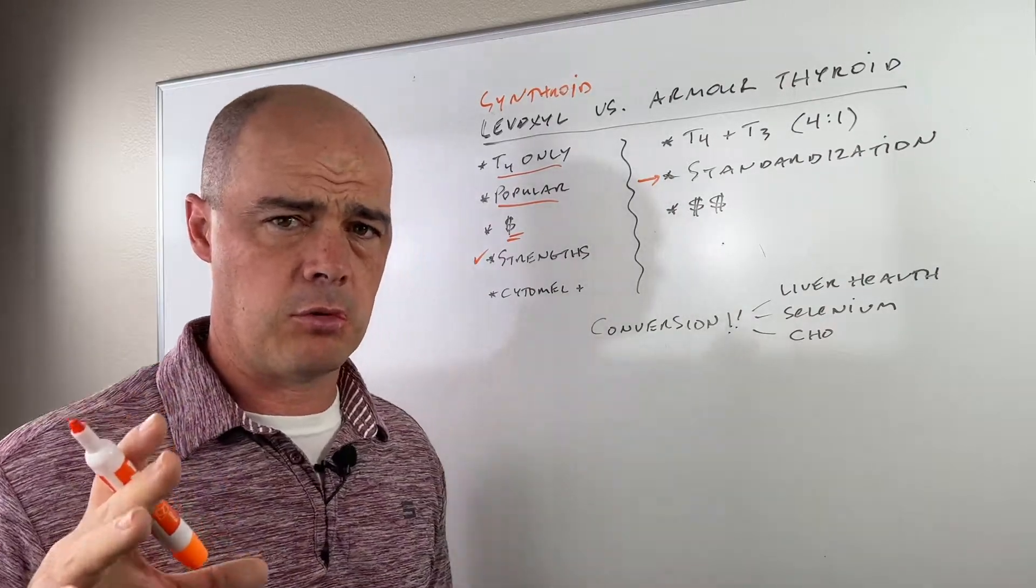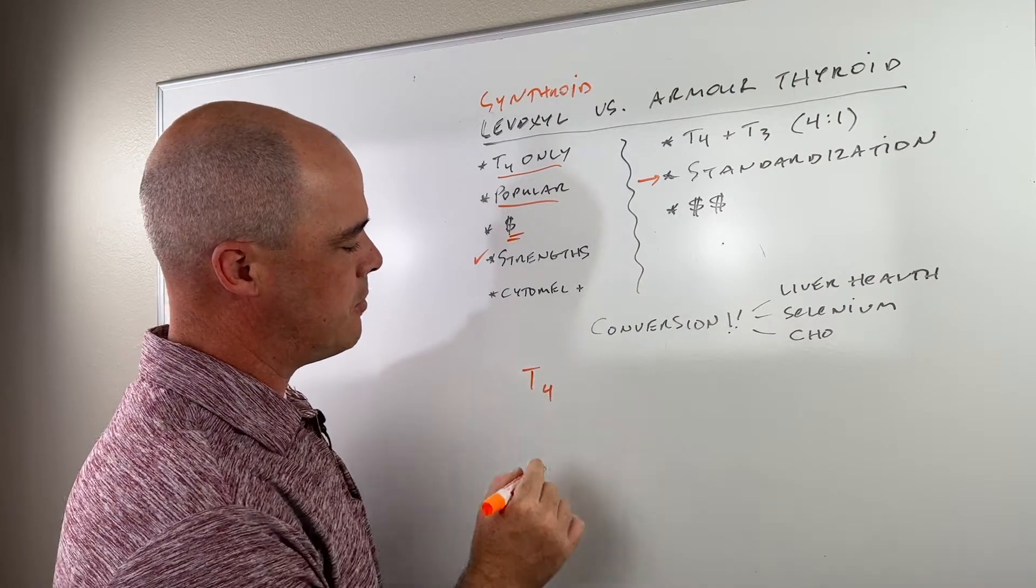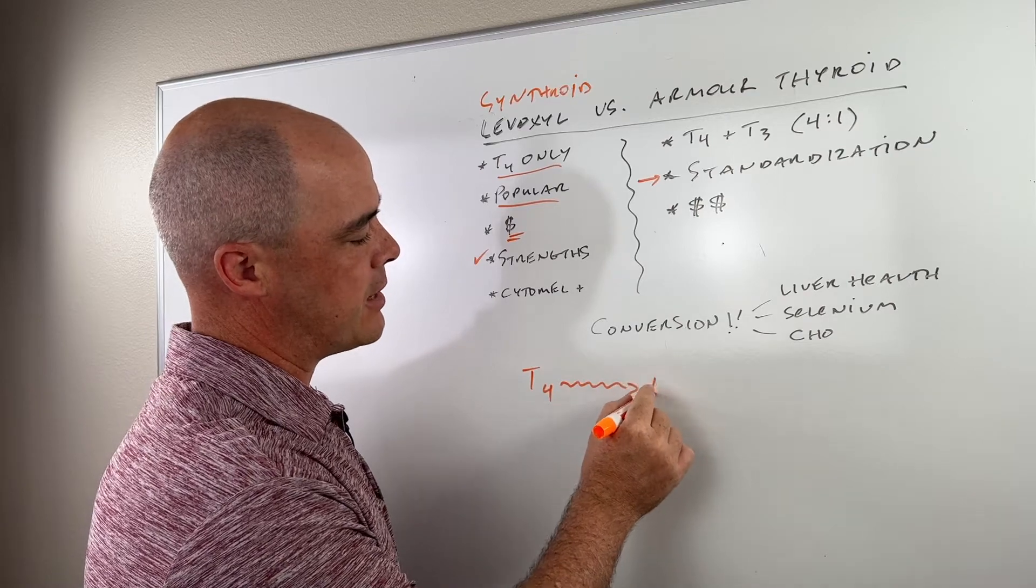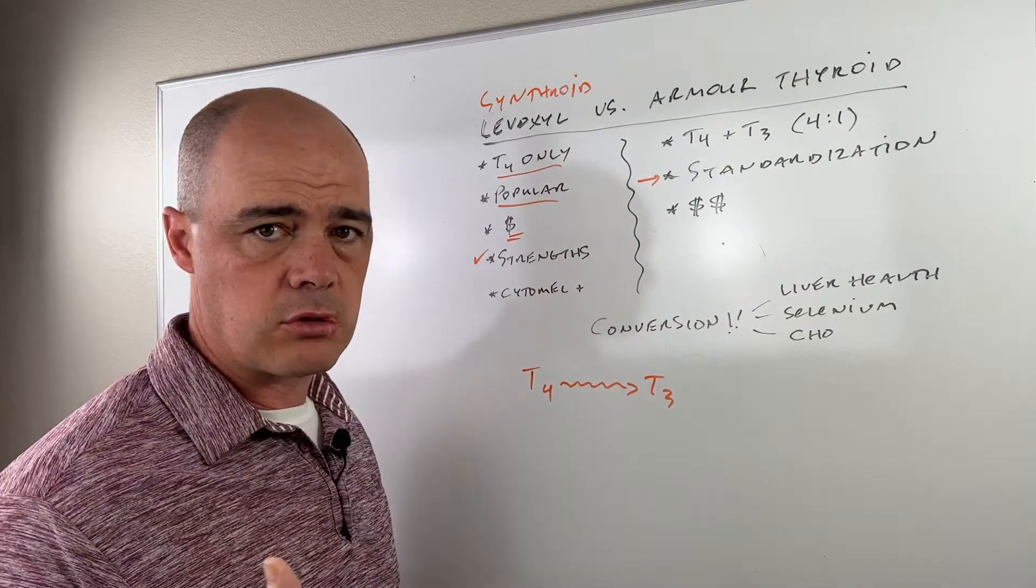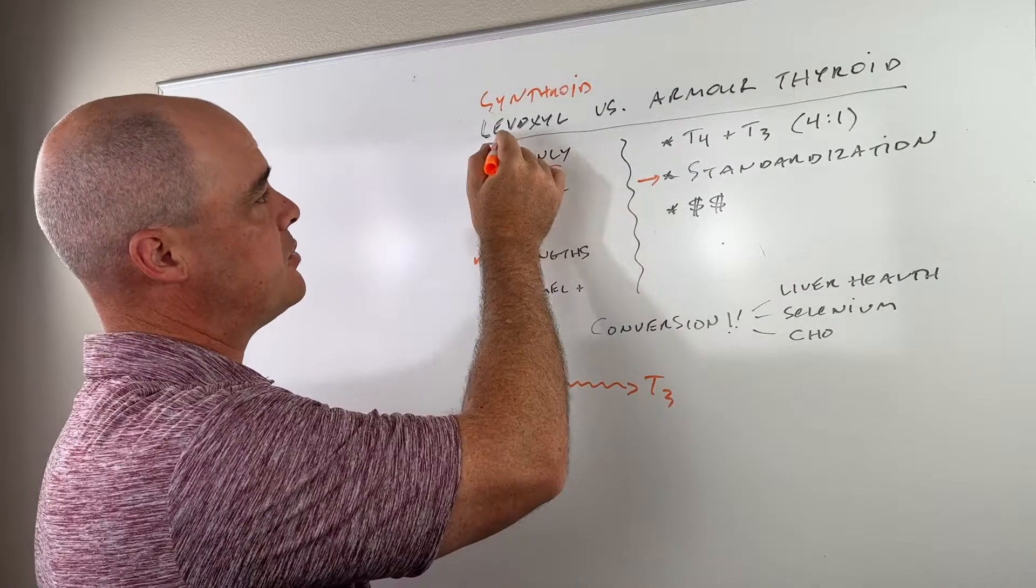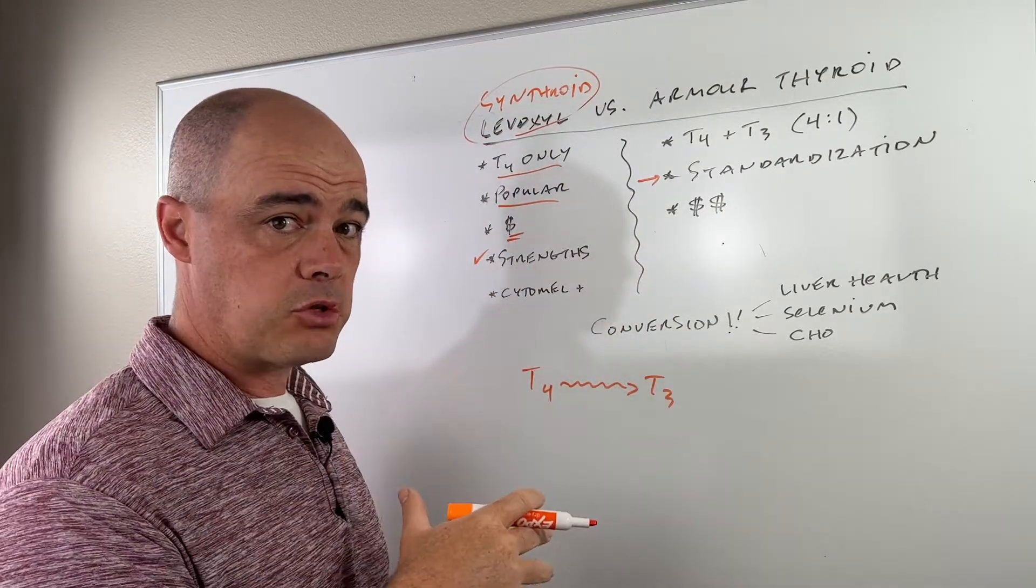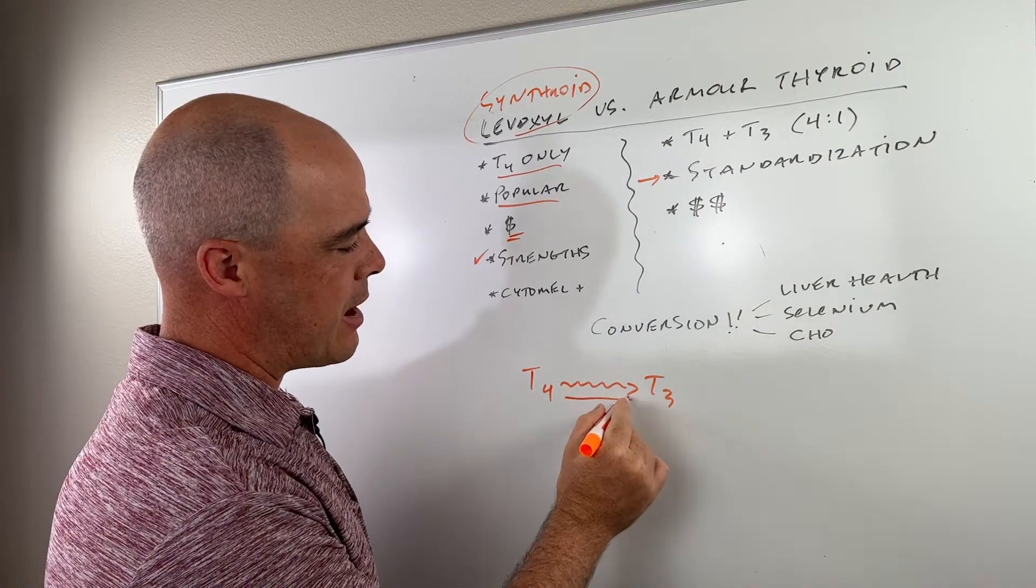But here's the thing I really want to talk about. We already mentioned that in your body, you make a lot of T4. Your body converts most of that to T3. So if we give somebody Levoxel or Synthroid, which is all T4, and I made another video about how I see people given T4 and their labs look better, but they still feel like crap. Well, what's going on is they're most likely not converting.